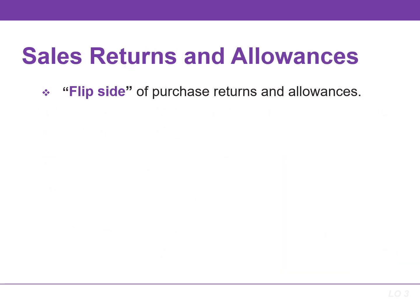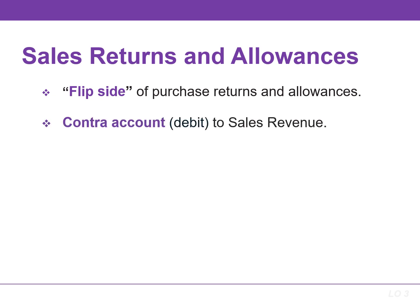We'll now look at the flip side of purchase returns and allowances, which the seller records as sales returns and allowances. These are transactions where the seller either accepts the goods back from a purchaser, which is a return, or grants a reduction in the purchase price so that the buyer will keep the goods, which is an allowance.